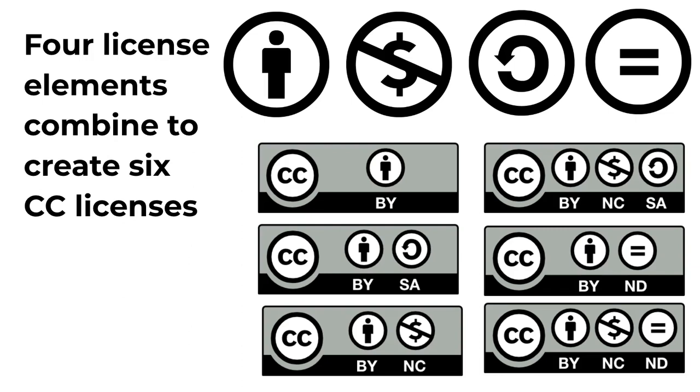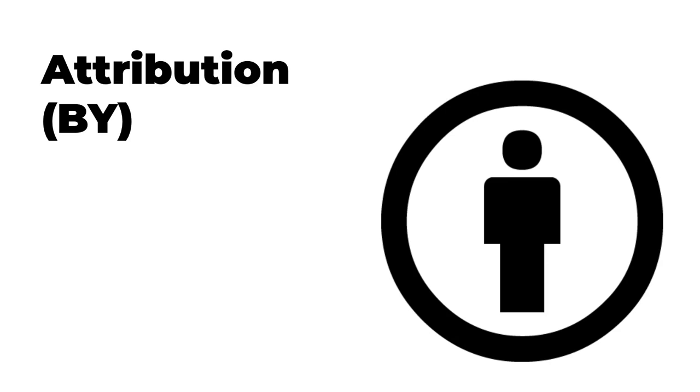Four license elements combine to create six CC licenses. Before sharing your work with a Creative Commons license, it is important to understand each of these elements and what they mean. This symbol means Attribution, or BY. All of the CC licenses include this license element. Attribution ensures that the user of a CC-licensed work provides credit to the licensor and certain other information, such as where the original work may be found. This element is essentially the same as the requirement to cite your sources in academic work — it's what we would do anyway.